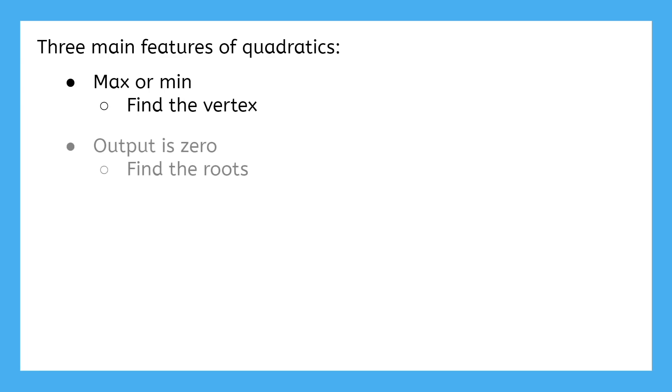In most scenarios involving quadratics, there are three features you're likely interested in: the max or the min, which is always the vertex; a time when the output is zero, which are the roots; or an initial value, which is the y-intercept. In this video, you're going to learn how to identify and calculate all three of these using vertex form.